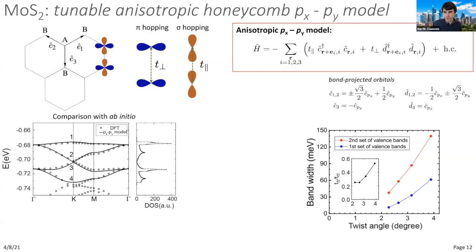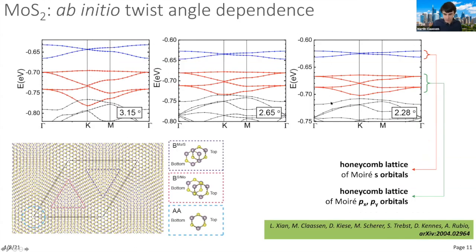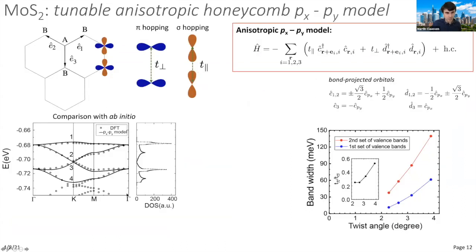What does this mean in terms of an effective model? These are meV energy scales, so one can gate-tune the chemical potential into the px,py orbitals rather than the topmost s-orbital set. A simple anisotropic px,py model fitted to the ab initio structure shows that the nearest-neighbor tight-binding model is parametrized by π and σ hopping between p-orbitals. The relative magnitude is a function of twist angle—becoming progressively more anisotropic as twist angle decreases—while the bandwidth is also reduced due to kinetic energy quenching.